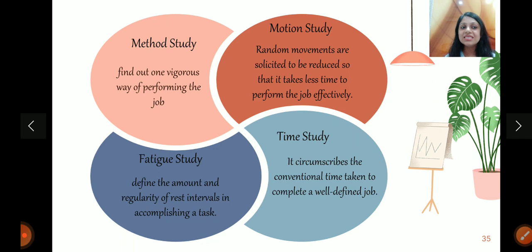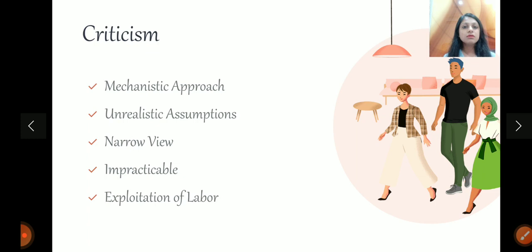So this was the complete theory of scientific management. It has four principles, which we have learned, and it has five techniques, which we have learned. Now of course, there is a criticism. This theory was criticized based, number one, it is a very mechanistic approach.